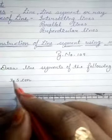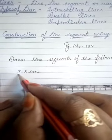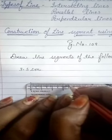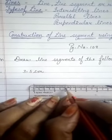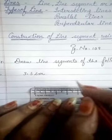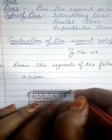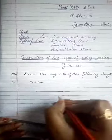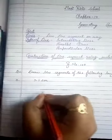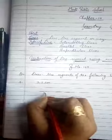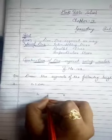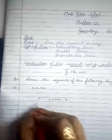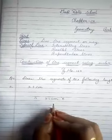Now, 3.5 means 3 centimetres and 5 millimetres. So we will count the small lines: 1, 2, 3, 4, 5. Our line segment will end here — it is 3.5. We will mark a point here, because a line segment has 2 fixed points. I will label this point as A and this point as B. The length is 3.5 centimetres. This is how you draw line segments.